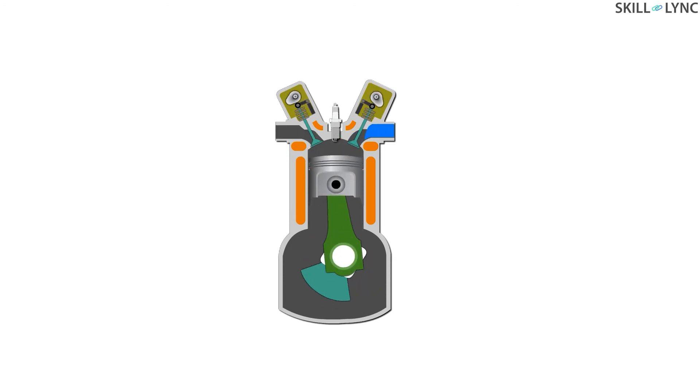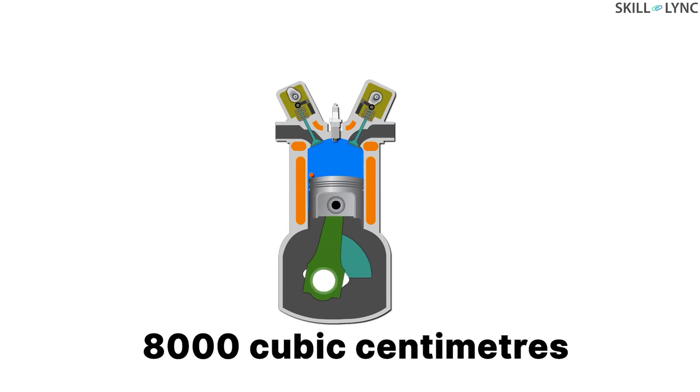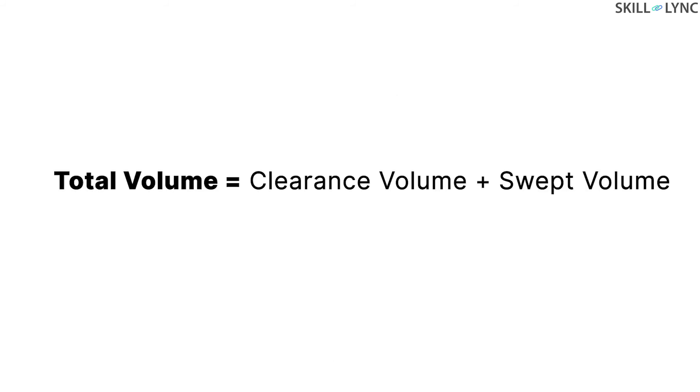When an engine is said to be of 8,000 cc, it means that the total volume of the engine cylinder is 8,000 cubic centimeters. This total volume is the sum of clearance volume and swept volume.